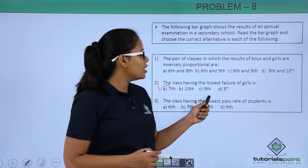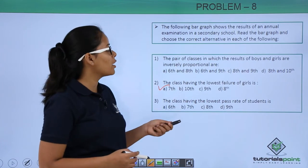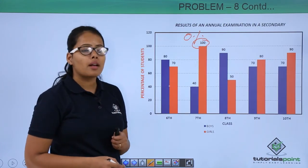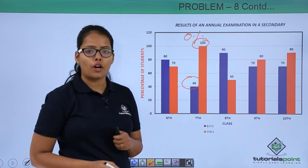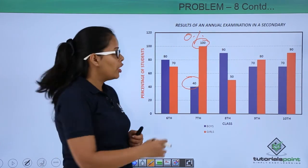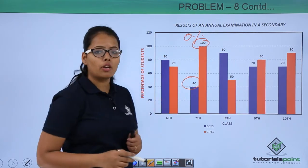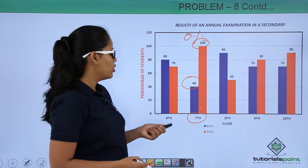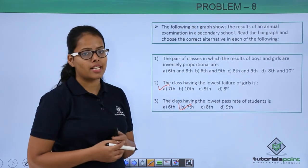The next question asks for the class having the lowest pass rate of students. Looking back at the bar graph, the lowest pass rate is 40%. When you look at all the levels, you can see that 40% is the lowest value and that belongs to 7th class. So the answer to this problem is also 7th class.